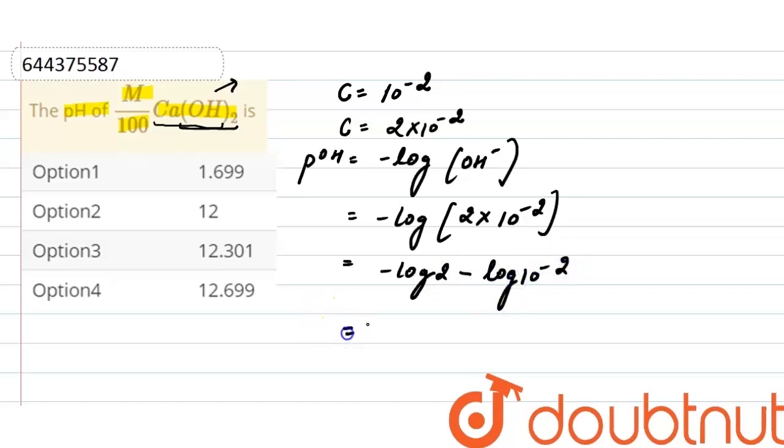After solving this will be minus of 0.30 and plus of 2, and this will be 1.70.